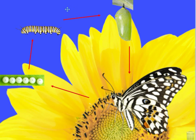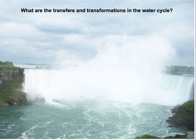And ultimately out of this cocoon emerges the adult butterfly — transformation. With that simple review of transfer and transformation, let's consider this picture of the world famous Niagara Falls. What are some transfers and transformations that you can identify?